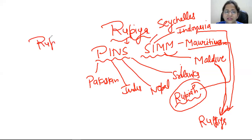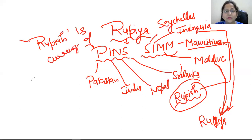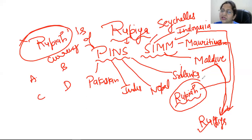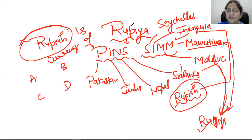For an example exam question, they will give you Rupiah and ask: is it the currency of which country? They will give options A, B, C, D. Now you know: Rupiah is the currency of Indonesia. Right now we have done 24 countries' currencies. Today we are going to cover 80 currencies — I hope you will understand this very well.